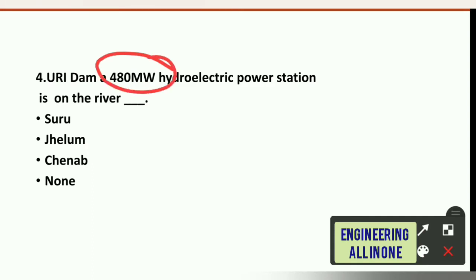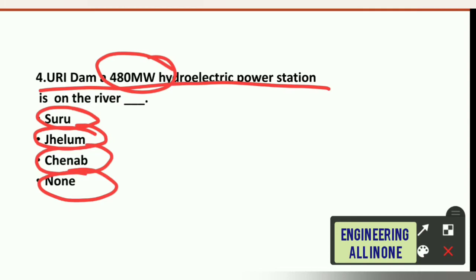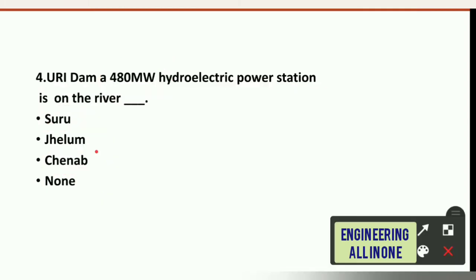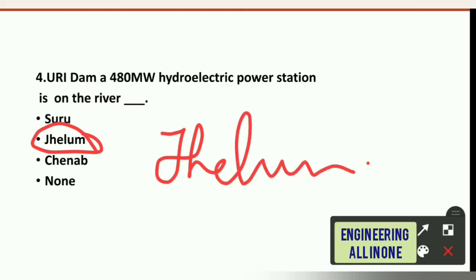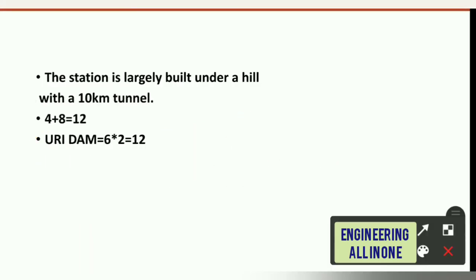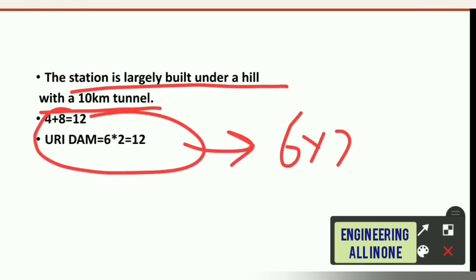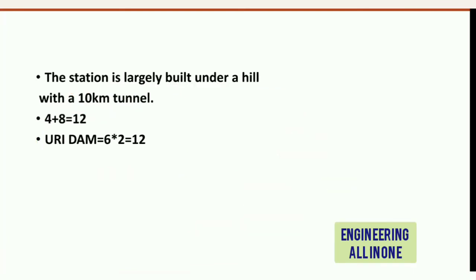Now, on which river is Uri dam built? Options are: Suru River, Jhelum, Chinab, or none. The right option is option B: Jhelum River. An additional point about Uri dam: the station is largely built under a hill with a 10 kilometer tunnel.